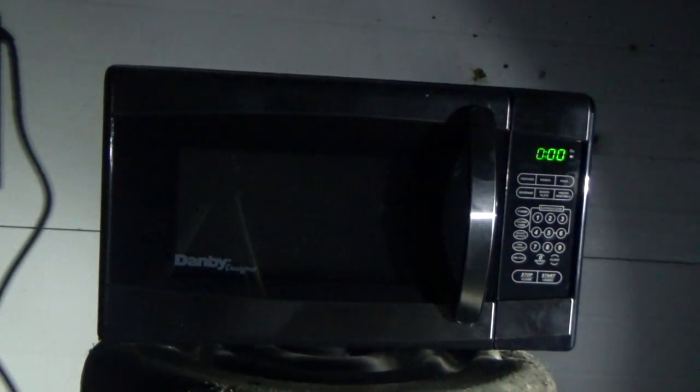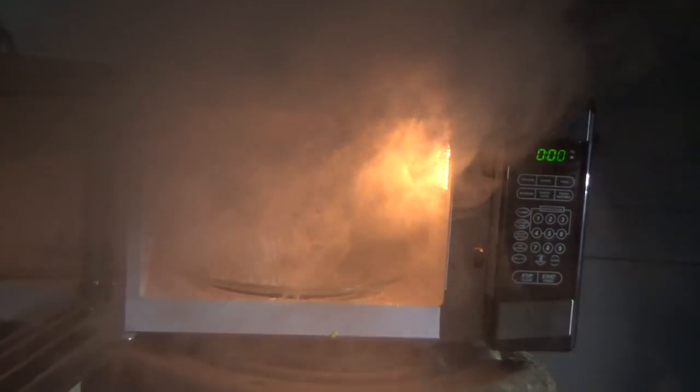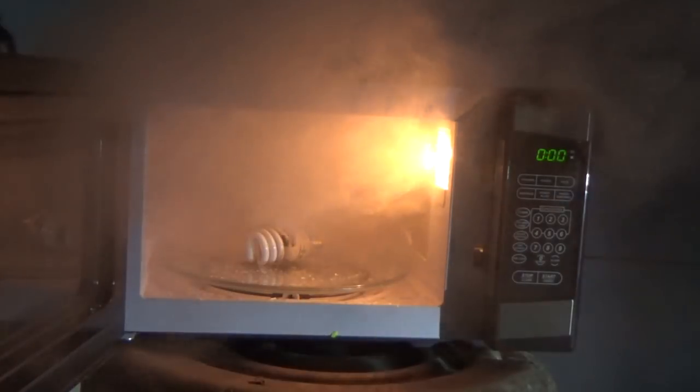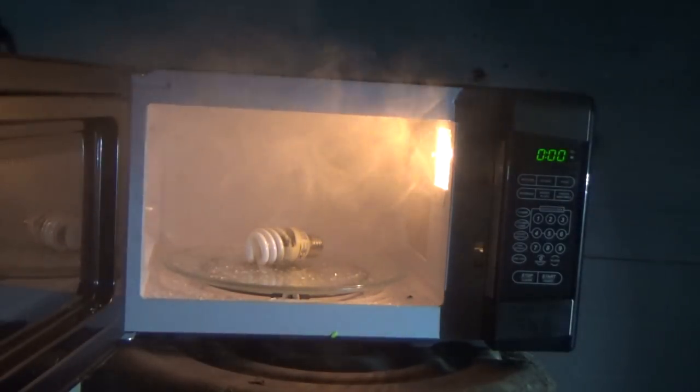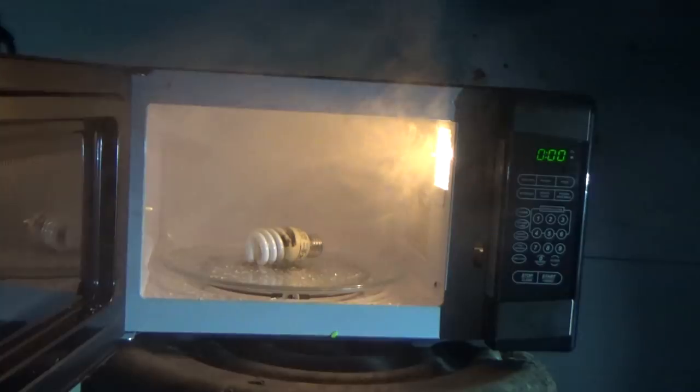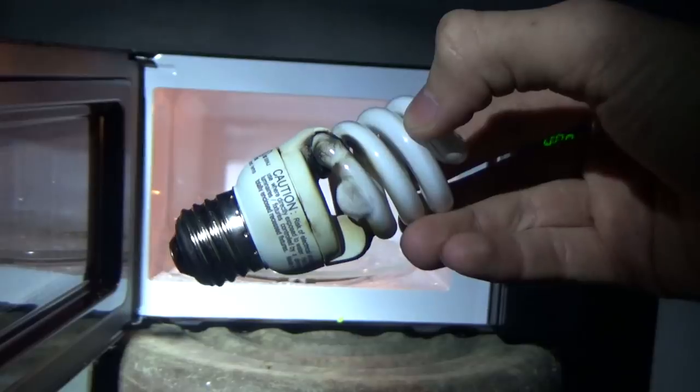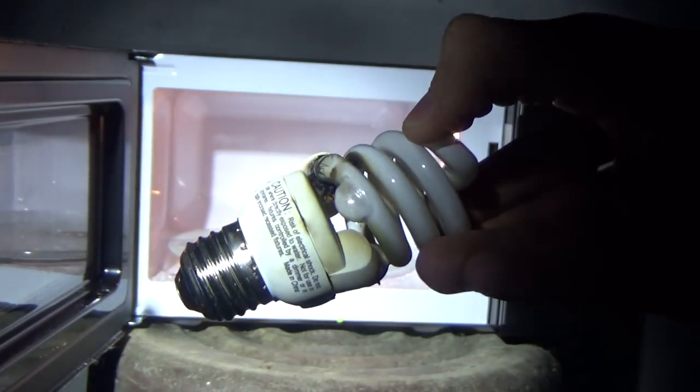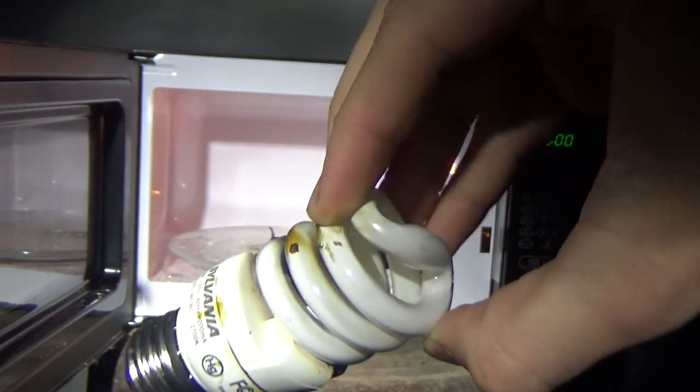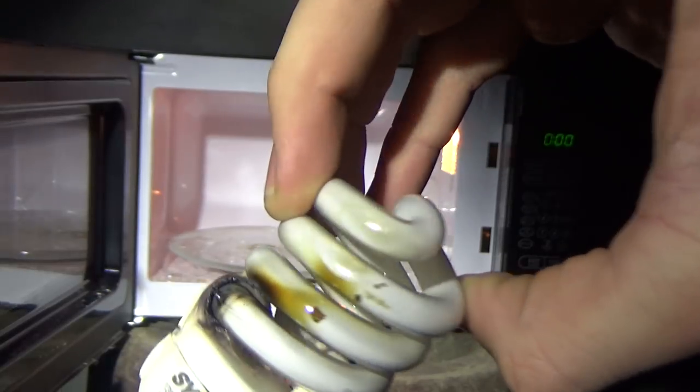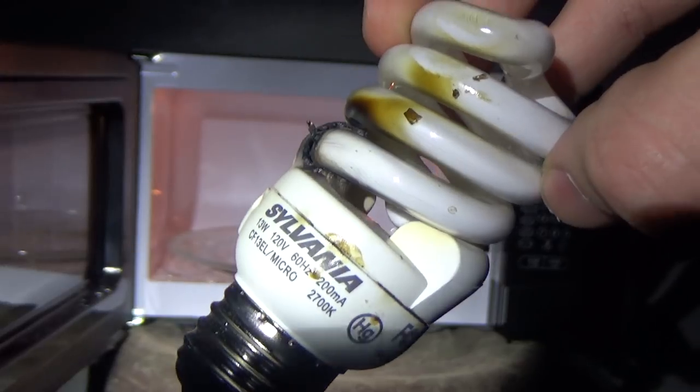After about 30 seconds, this eco one did not explode. It is releasing some gross fumes still, and it has some liquid right there. It is not a good idea to put light bulbs in the microwave.